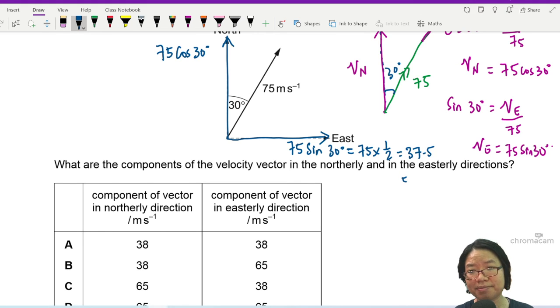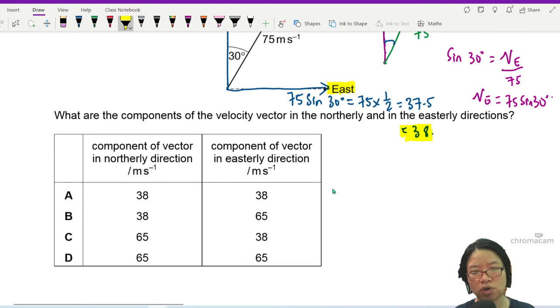which happens to be 38. So this means in the east direction or the easterly direction, the velocity is 38 rounded to 2 significant figures. So I will only take 38.